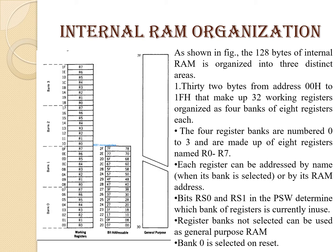The 128 bytes of internal RAM is organized into three distinct areas. 32 bytes from address 00H to 1FH make up 32 working registers organized as four banks of eight registers each. The four register banks are numbered 0 to 3 and consist of eight registers named R0 to R7. Each register can be addressed by name when its bank is selected or by its RAM address. Bits RS0 and RS1 in the PSW determine which bank is in use; register banks not selected can be used as general purpose RAM. Bank 0 is selected on reset by default.